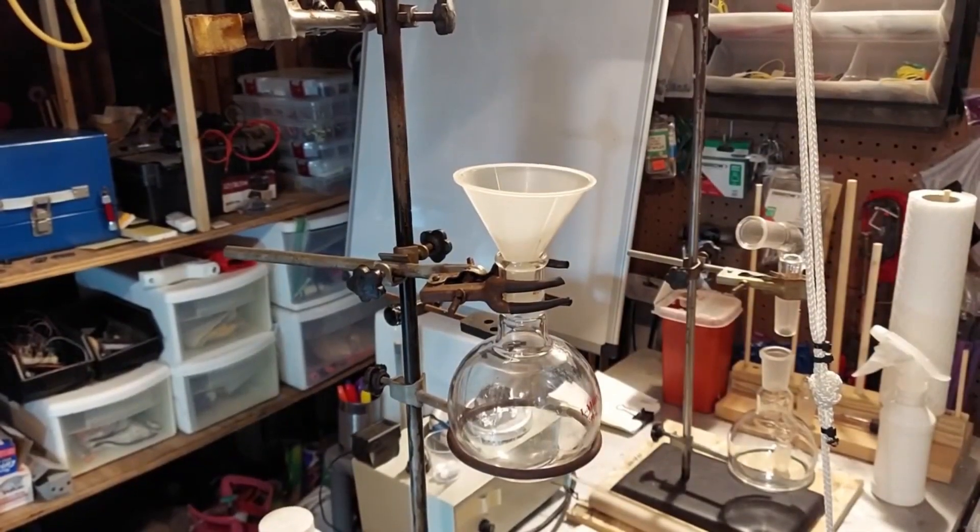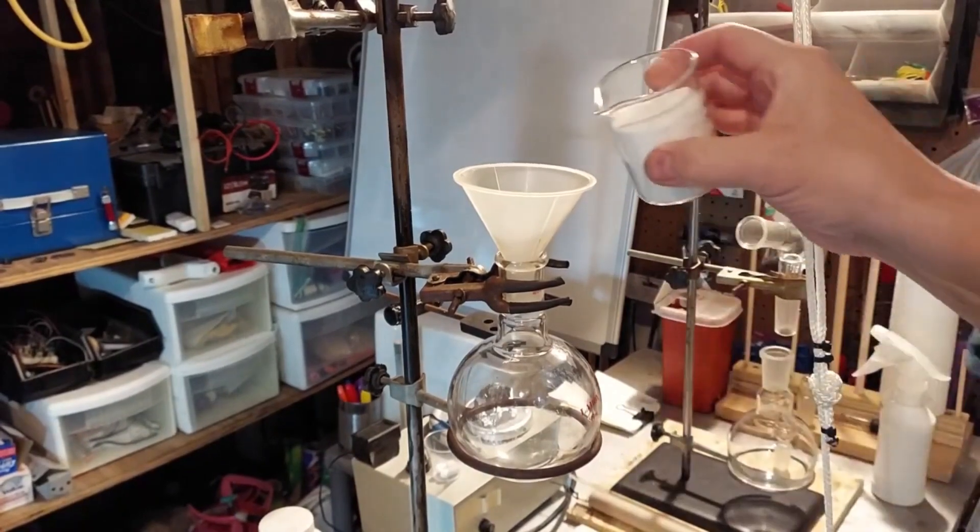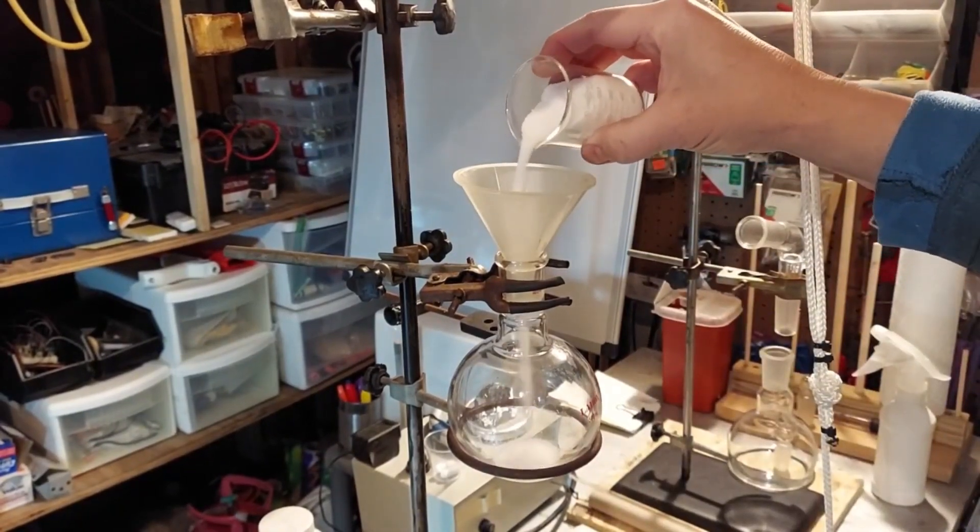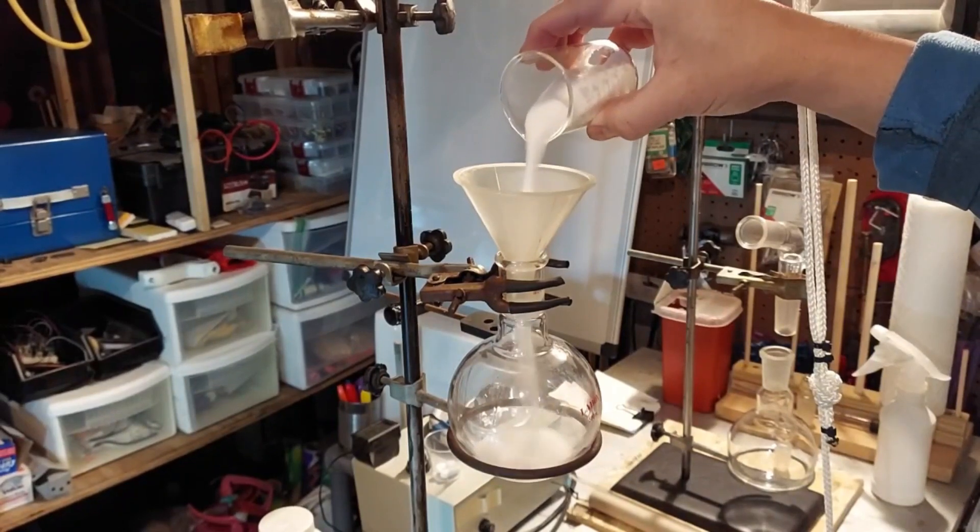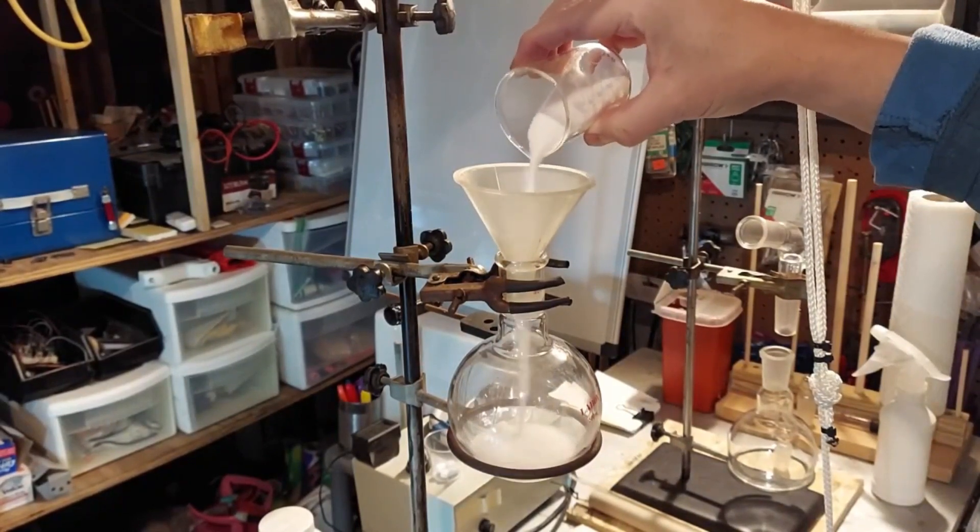To start making our fuming nitric acid, I'm going to add the potassium nitrate first. You want to add your solids first, then your liquids, for obvious reasons—liquids can catch the solids as they come through.